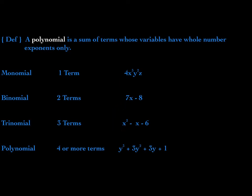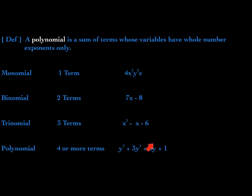Notice that all of the exponents are whole numbers only. If an exponent is not shown, it's assumed to be one — the variable has an exponent of one. So all of these exponents are positive whole numbers, and all of these are polynomials.